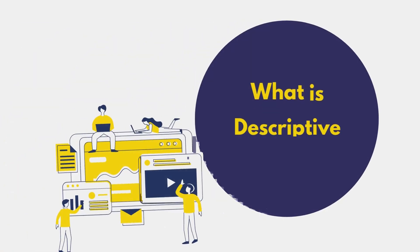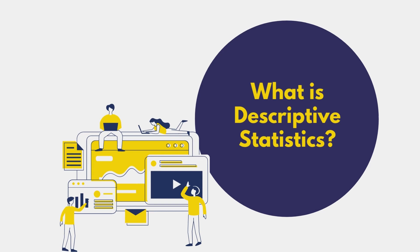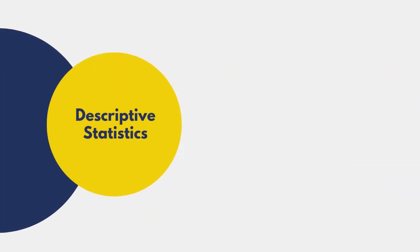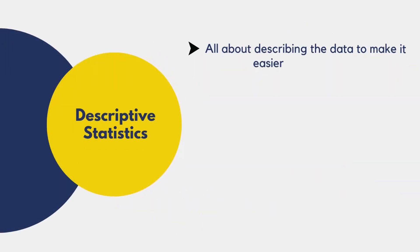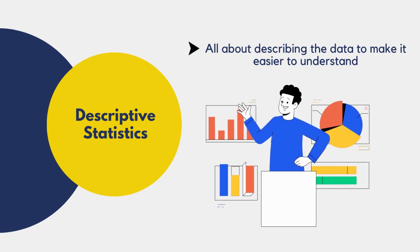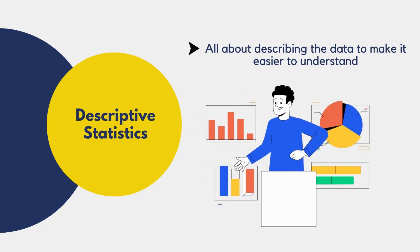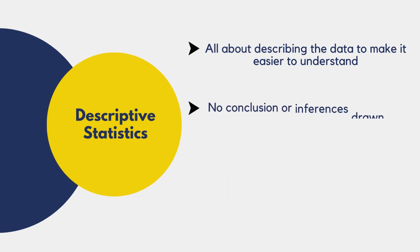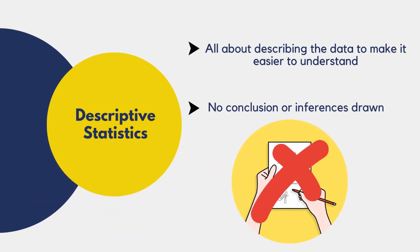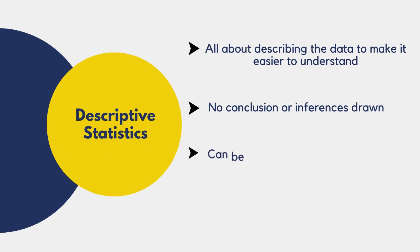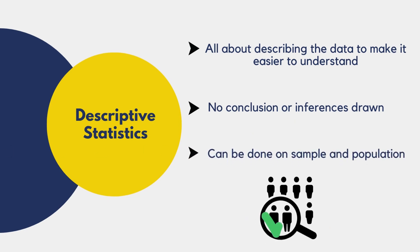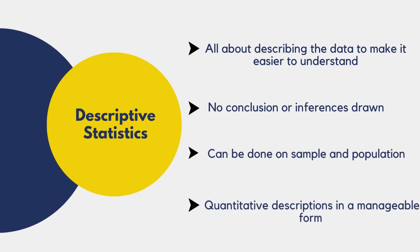Let's start today's video with what is descriptive statistics. As the name suggests, descriptive statistics is all about describing the data. By describing the data, we mean summarizing and graphing it so that it is easier to understand. We generally do not reach a conclusion or draw inferences, but just summarize the data. It can be done on both the sample and the whole population. It presents quantitative descriptions in a manageable form.